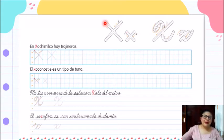Ahora, en la parte de abajo vamos a encontrar cuatro frases. Esas frases las vamos a leer y enseguida ustedes las van a repetir conmigo. La primera frase dice así: En Xochimilco hay trajineras. La segunda frase dice, el xoconostle es un tipo de tuna. Tercer frase, mi tía vive cerca de la estación Xola del metro. Cuarta frase, el saxofón es un instrumento de aliento.